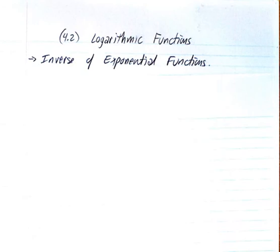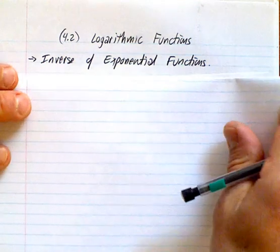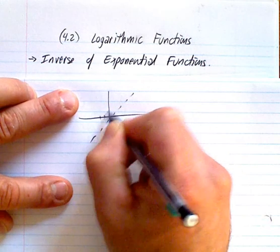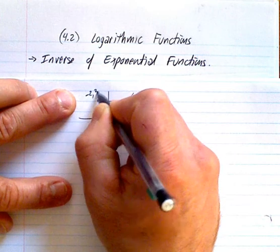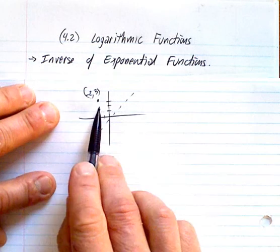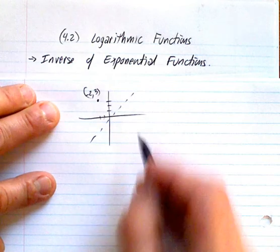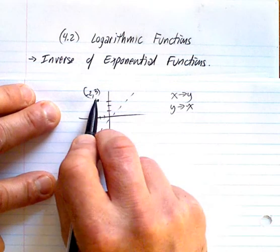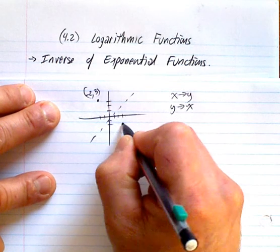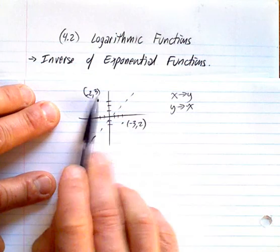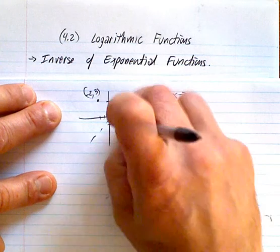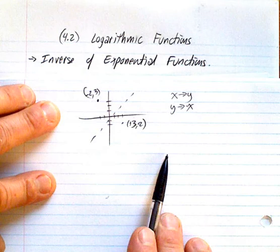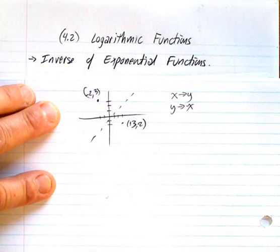Now if you remember inverse functions, the basic premise of that was that they flip over that y equals x axis. So if you had a point that existed at negative 2 and positive 3, that reflection would be across the y equals x axis, which means your x becomes y and your y becomes x. So the inverse of this point here would be 3 and negative 2. You've just flipped the x and y around, and that is the basic premise of what an inverse function is.